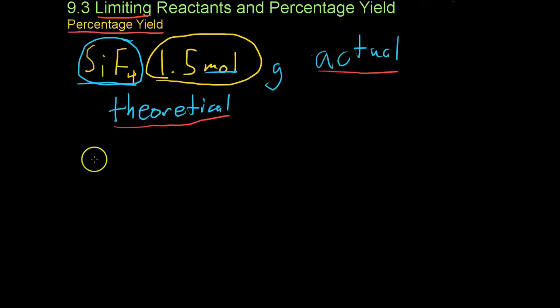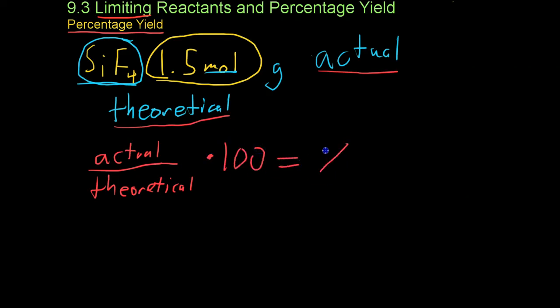The percentage yield is the ratio of the actual yield to the theoretical yield. Because this way you usually end up with a decimal somewhere close to one, they multiply this by 100 so that they can get a percentage.